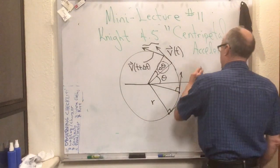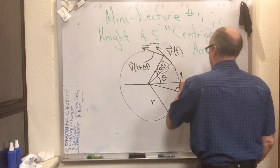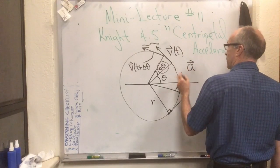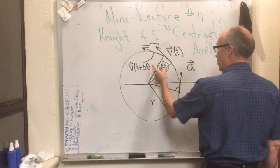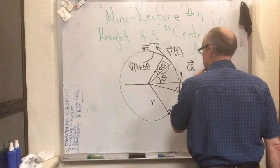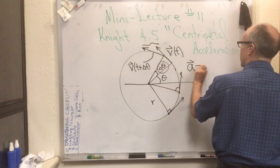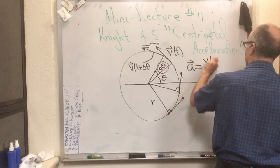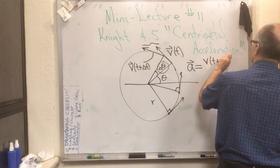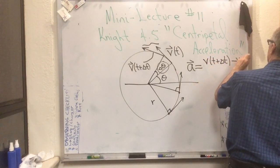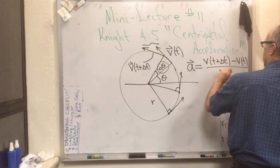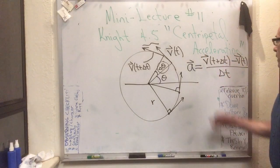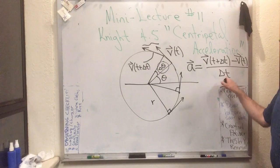Why would we do that? Because we want to know the acceleration. The acceleration, if we make delta t sufficiently small, or delta theta sufficiently small, is v at t plus delta t minus v at t over delta t. These are vectors — take the difference, divide by delta t.